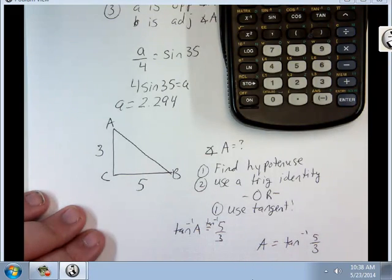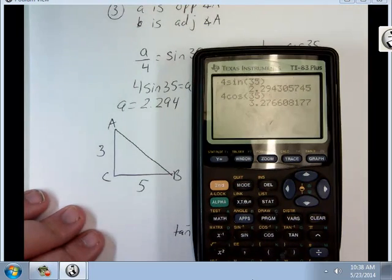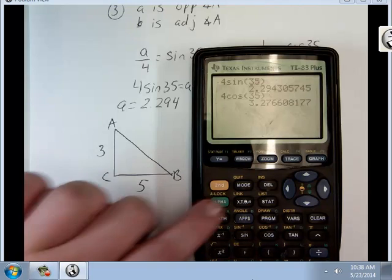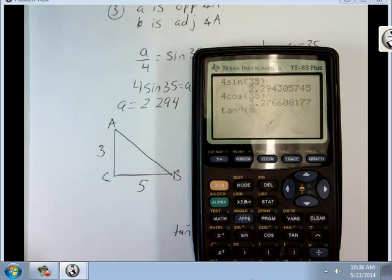So I go here. Second tan, 5 divided by 3. And there's my angle, 59.036.